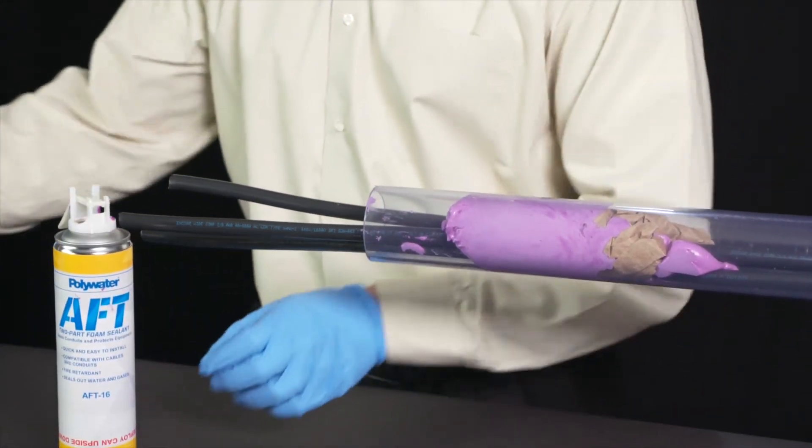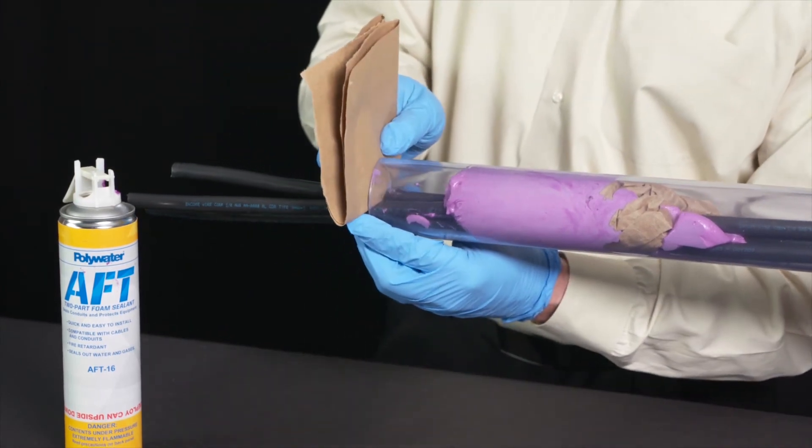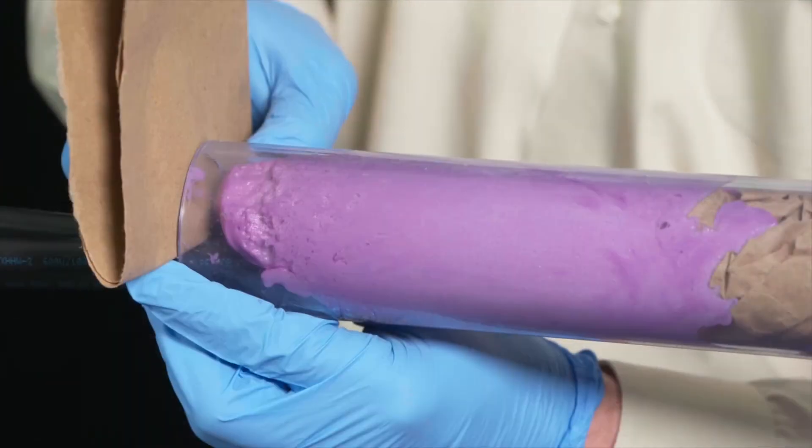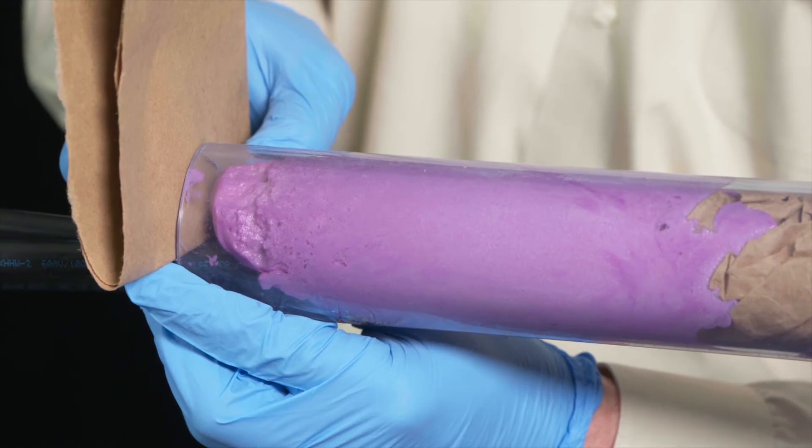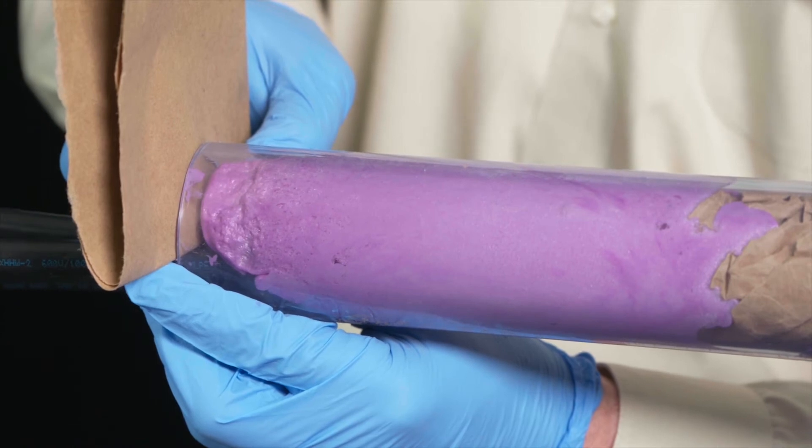After AFT has been deployed, place an additional dam on the outside of the conduit or hold with gloved hands until expansion is complete to prevent the expanding foam from escaping the conduit. The foam should be uniform in color.